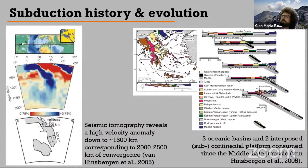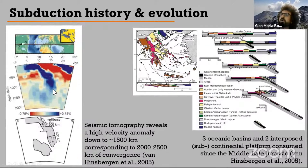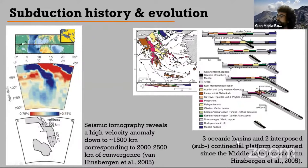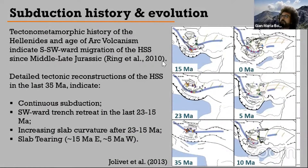This area has a very long history. Seismic tomography results tell us that the slab is visible down to 1,500 km depth, reconciled with the subduction of three oceanic basins and two interposed continental platforms since the middle-late Jurassic — more than 200 million years of subduction. The last oceanic basin is still subducting today, while the last continental platform is still subducting to the north of the Kefalonia Transform Fault. Since its development, the subduction system has been migrating south-southwestward.